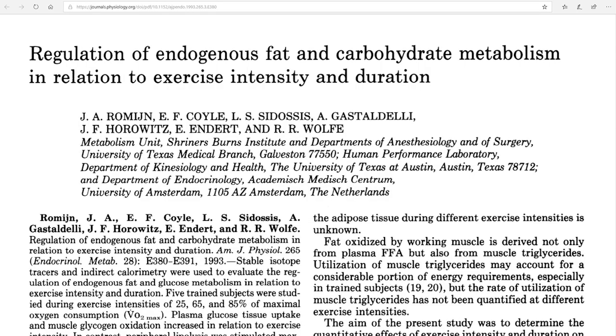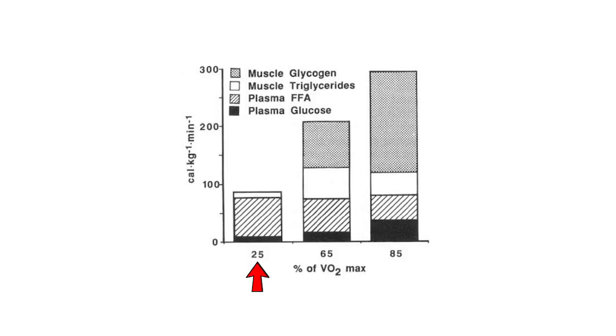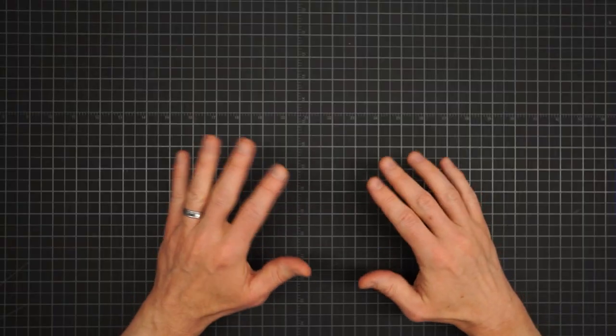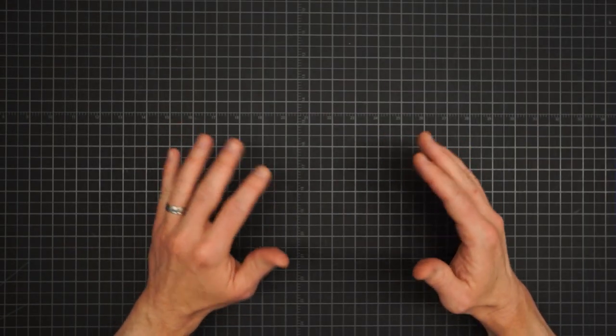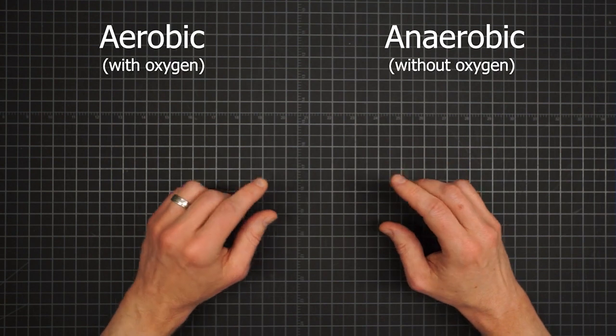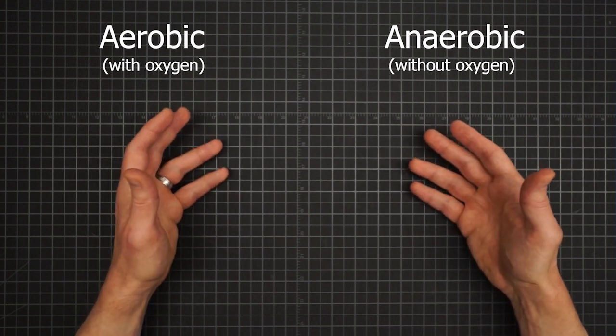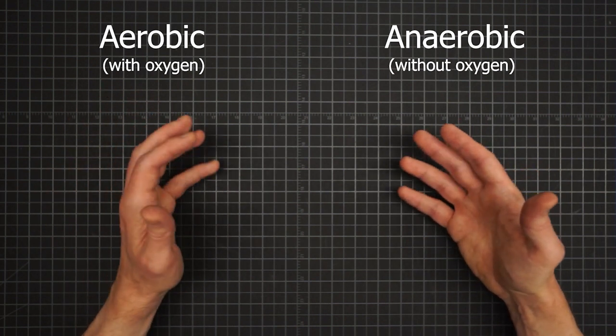So one of the main takeaways from part one came from this study about where the energy burned during exercise comes from, carbohydrates or fat. And the revelation was that it depends heavily on the intensity of that exercise. At a walking pace, virtually all the energy you expend comes from fat sources. But, as you start running at marathon speed, a profound change in your metabolism occurs and a new source of energy appears, muscle glycogen.